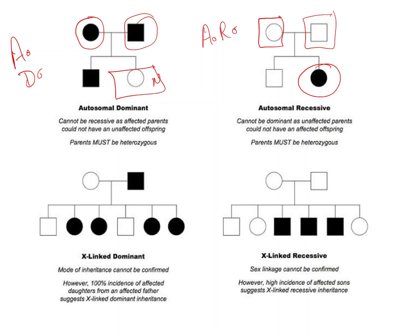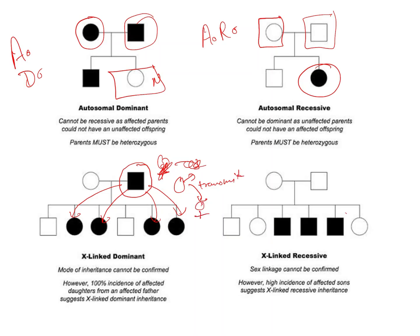For X-linked dominant, the father is diseased and transmits the disease to all his daughters — it has to be the male transmitting disease to all female offspring. For X-linked recessive, a high incidence of affected sons is seen, and the mother is either a carrier or sometimes appears normal.